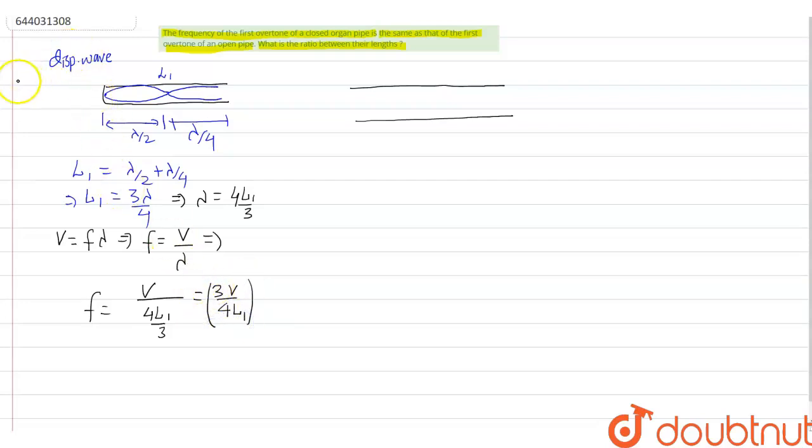Now we move to the open organ pipe. In open organ pipe both ends are open. So at both ends displacement antinode will form, and if we talk about the first overtone then the wave formation will be like this.